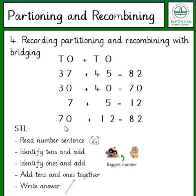So my number sentence now says 70 plus 12. You'll notice that my second number is now a two-digit number — it goes over 10. So this time we put 70 in our head, add on the 10 first to get 80, and then add on the ones: 80, 81, 82.